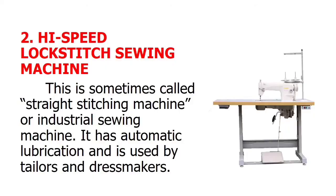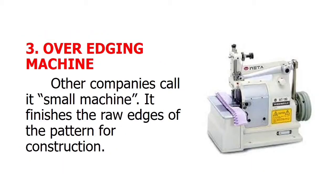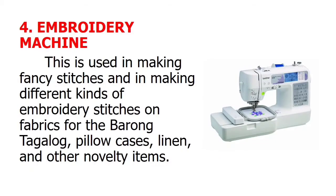High-speed lock-stitch sewing machine: this is sometimes called a straight-stitching machine or industrial sewing machine. It has automatic lubrication and is used by tailors or dressmakers. Over-edging machine: other companies call it a serger machine. It finishes the raw edges of the pattern for construction. Embroidery machine: this is used in making fancy stitches and different kinds of embroidery stitches on fabrics for the Barong Tagalog, pillowcases, linen, and other novelty items.